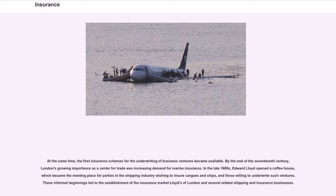At the same time, the first insurance schemes for the underwriting of business ventures became available. By the end of the 17th century, London's growing importance as a center for trade was increasing demand for marine insurance. In the late 1680s, Edward Lloyd opened a coffee house, which became the meeting place for parties in the shipping industry wishing to insure cargoes and ships, and those willing to underwrite such ventures. These informal beginnings led to the establishment of the insurance market Lloyd's of London and several related shipping and insurance businesses.